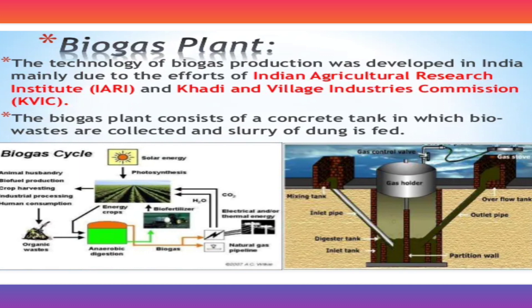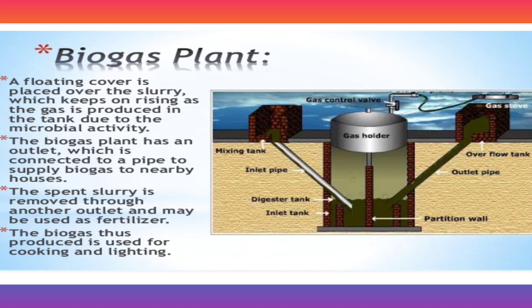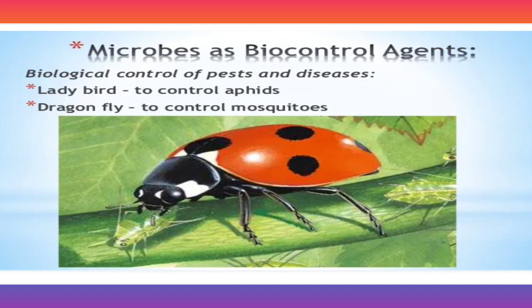The technology of biogas production was developed in India mainly due to the efforts of the Indian Agriculture Research Institute (IARI) and Khadi and Village Industrial Commission (KVIC). The biogas plant consists of a concrete tank in which biowastes are collected and a slurry of dung is fed. A floating cover is placed over the slurry. Gas is produced in the tank due to microbial activity. The plant has an outlet connected to a pipe to supply biogas to nearby houses. The spent slurry is removed through another outlet and may be used as a fertilizer. The biogas produced is used for cooking and lighting.